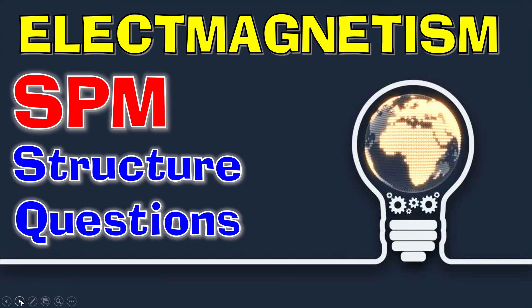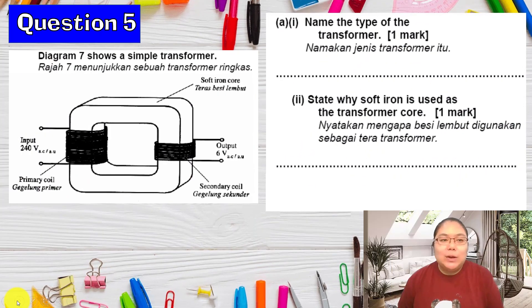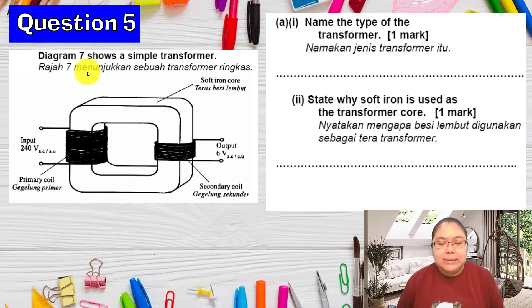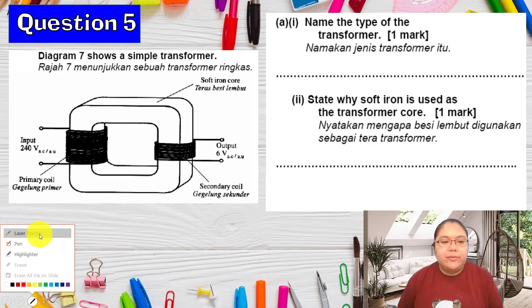Hi students, today I want to continue about the structure question for electromagnetism. Let's see the question now. The first one should be diagram 7, that's question 5. We continue from the last lesson. I will upload this question in the comments. Later you can go there and download the question. Let me discuss question 5 first.